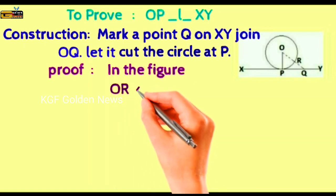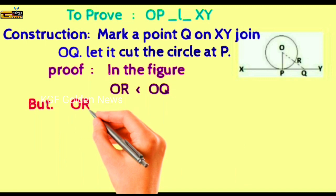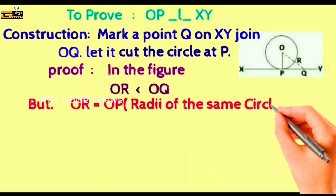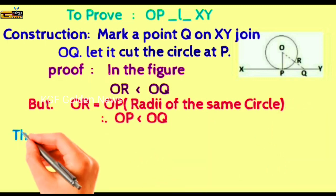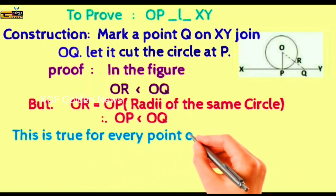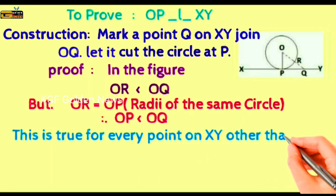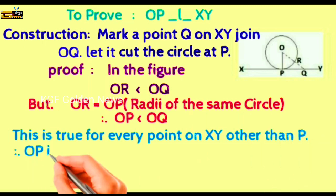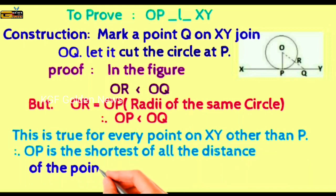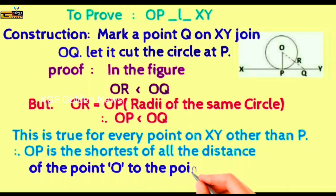Proof: In the figure, OR is lesser than OQ but OR is equal to OP. Radii of the same circle are equal. Therefore, OP is lesser than OQ. This is true for every point on XY other than P. Therefore, OP is the shortest of all the distance of the point O to the points of XY. Therefore, OP is perpendicular to XY. Hence, the theorem is proved.